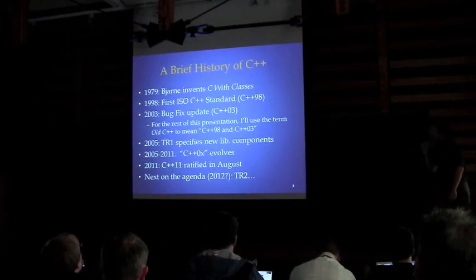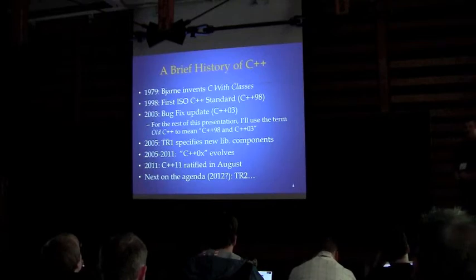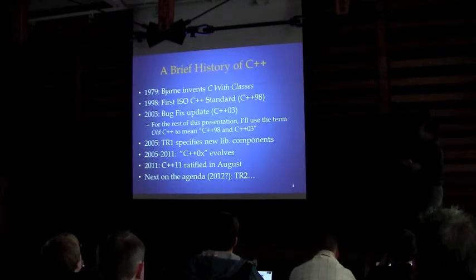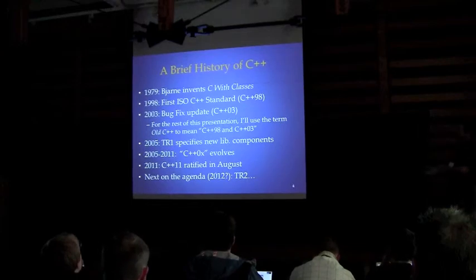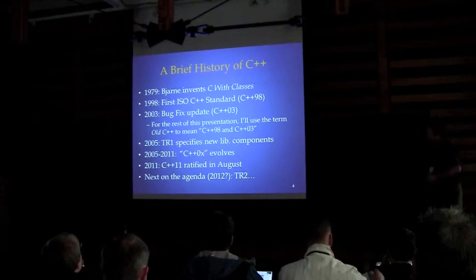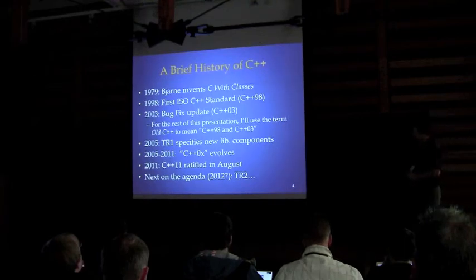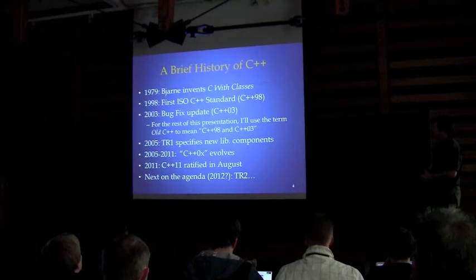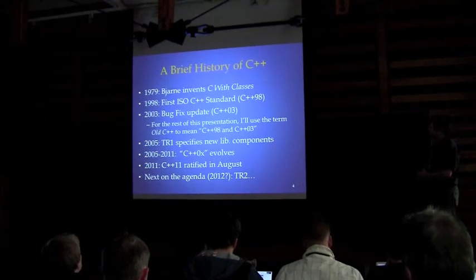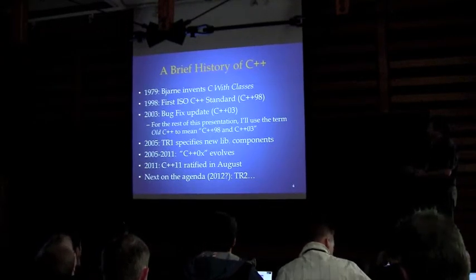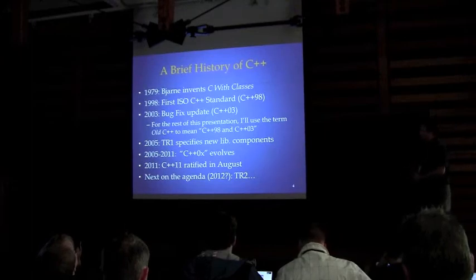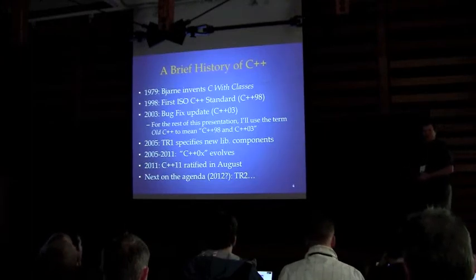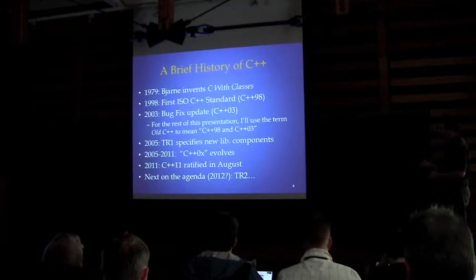In 2005, TR1 was released. The library committee released a set of specs for library components that would be in the final C++ OS, aka the C++11 language. Folks had many years to get used to this, of course via Boost. C++11 was finally ratified in August of last year and made official. The next step may be the next library interim release, TR2, in 2013.